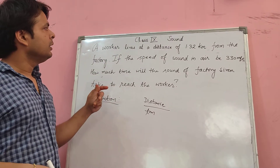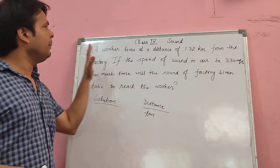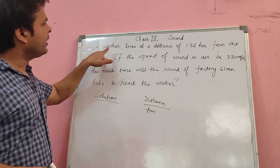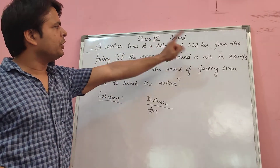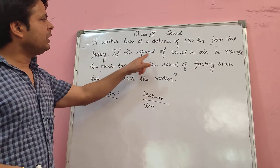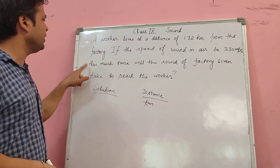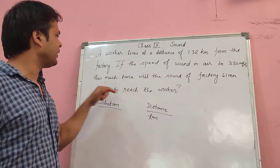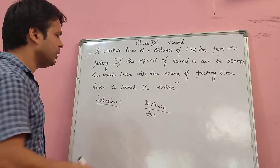Dear students, for Class 9 sound problem, the problem is: a worker lives at a distance of 1.3 km from the factory. If the speed of sound in air is 330 m/s, how much time will the sound of the factory siren take to reach the worker?